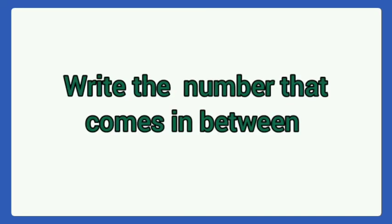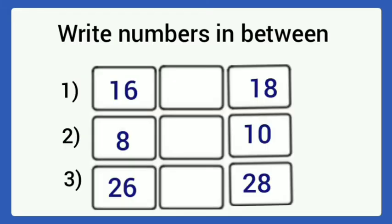Write the number that comes in between. First: 16 and 18. Which number is missing here? It is 17. Next one: 8 and 10. Which number comes in between? It is 9.